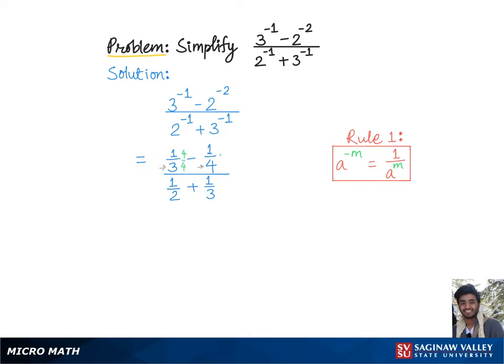Similarly, the least common multiple of 2 and 3 is 6, so to get a common denominator 6 we need to multiply both the top and bottom of the first fraction by 3 and that of the second fraction by 2, which gives us 4 over 12 minus 3 over 12 divided by 3 over 6 plus 2 over 6.